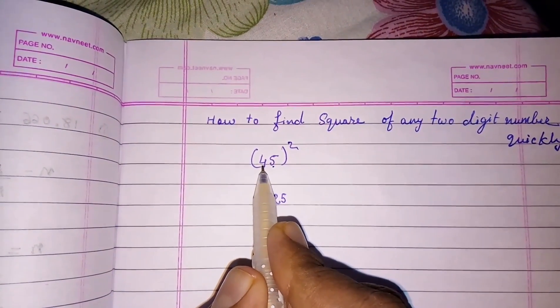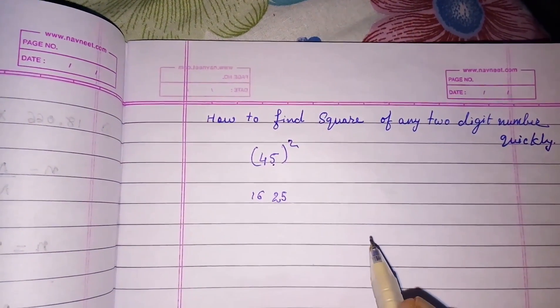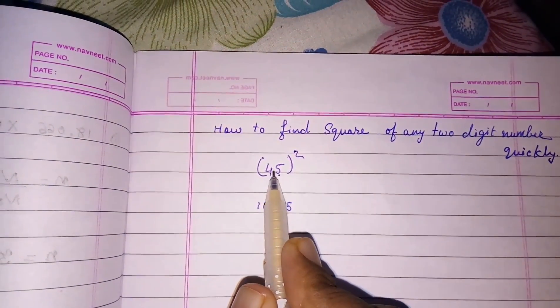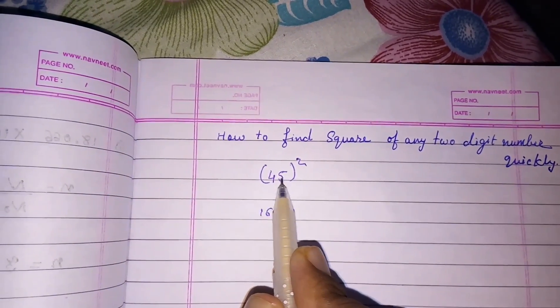So we have to write 25 on the right hand side, and we know the square of 4 that is 16, so we have to write 16 in front. Now just we have to multiply this: 4 times 5 is 20, and we have to double it or we have to multiply that with 2.